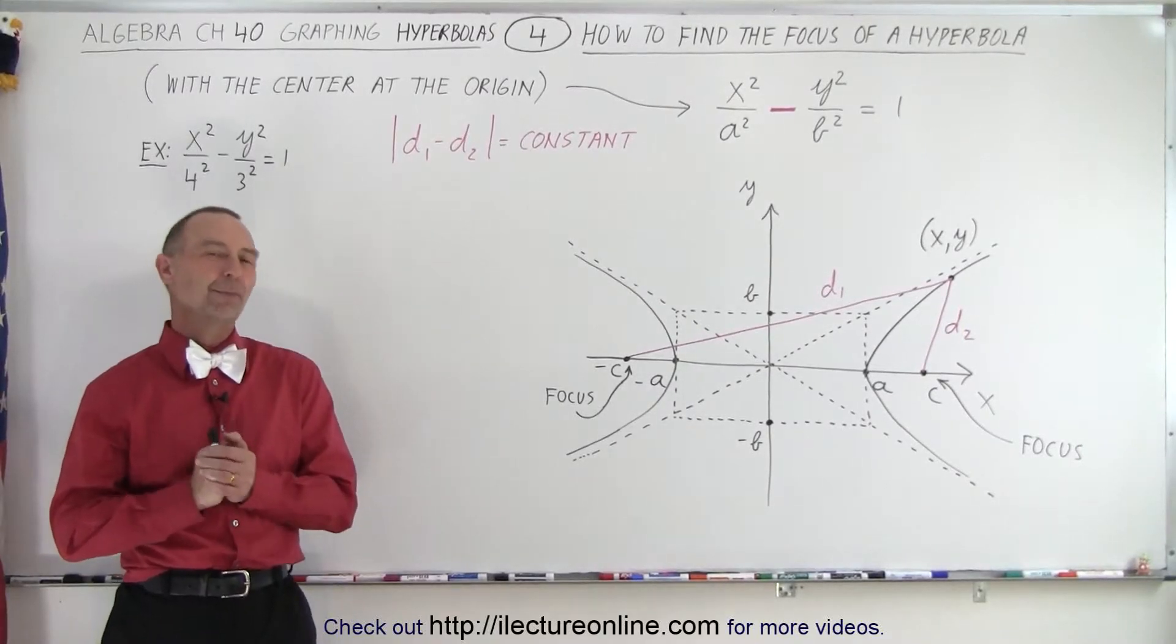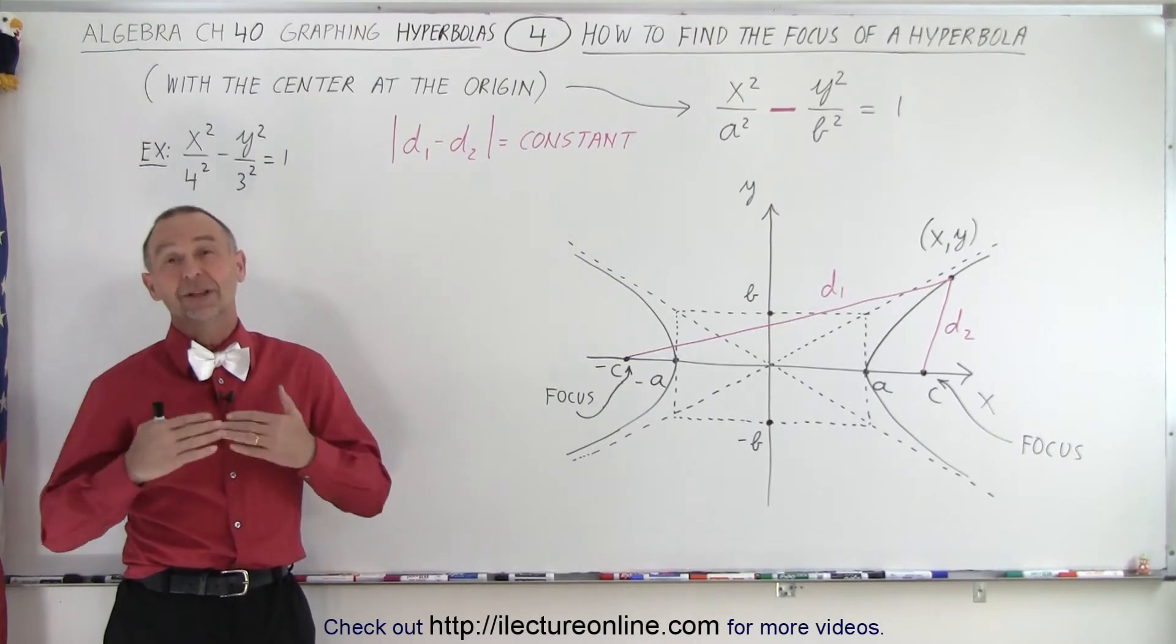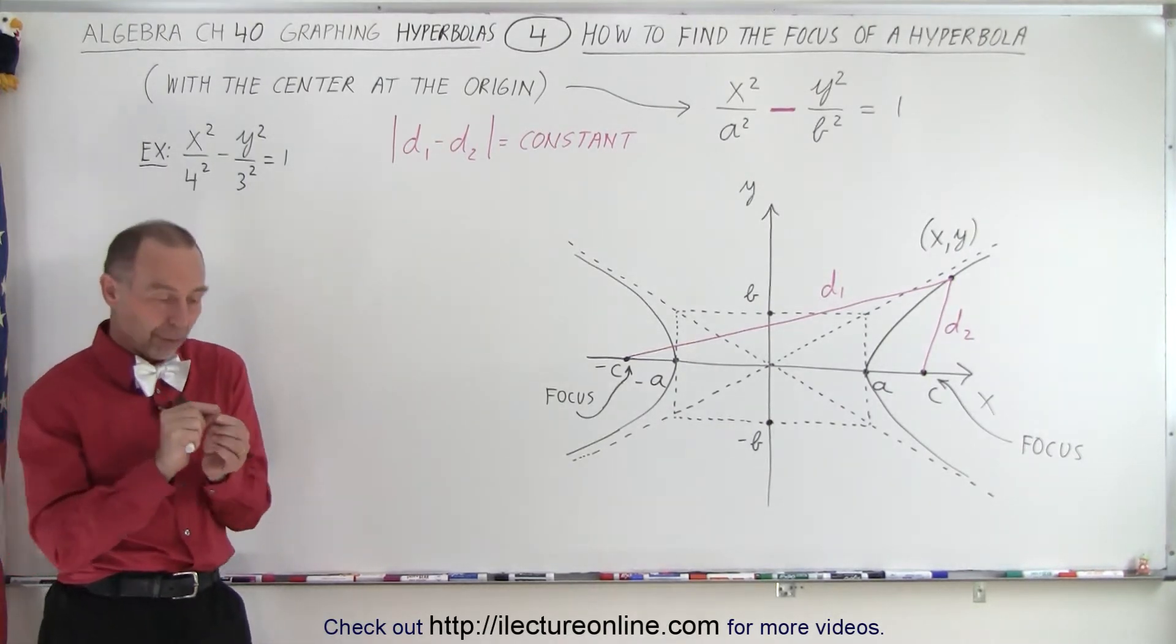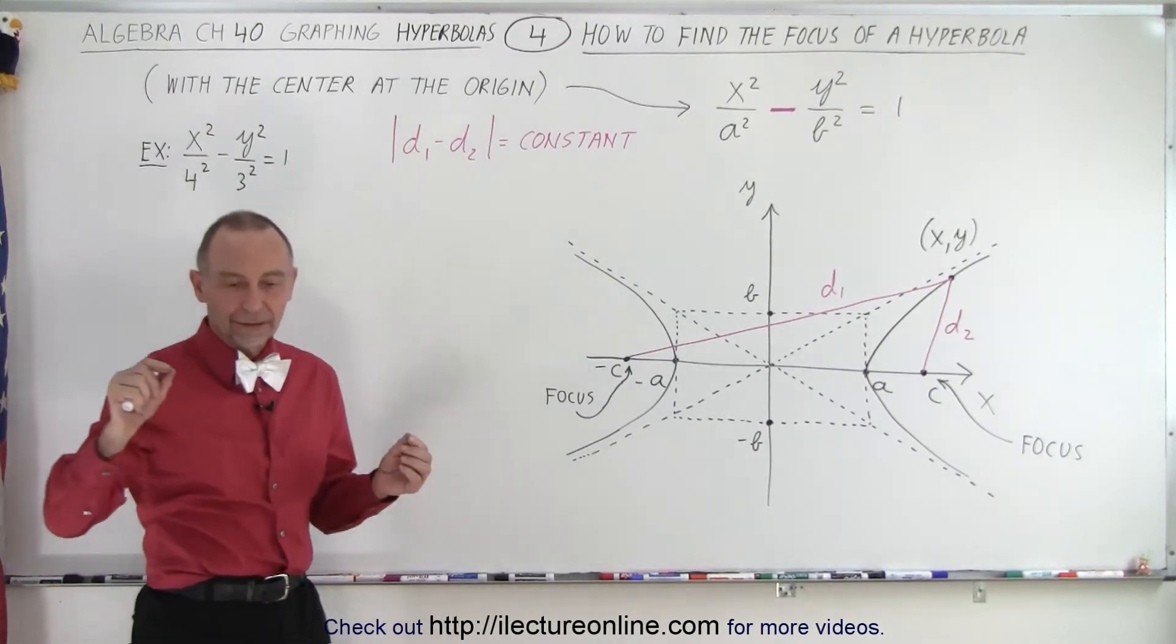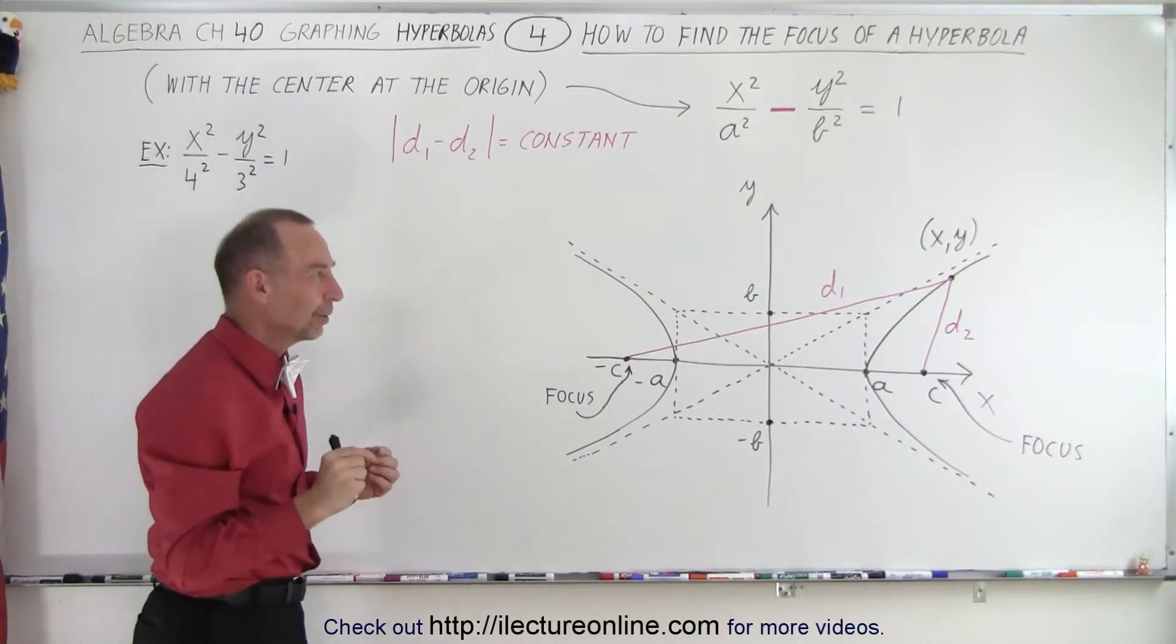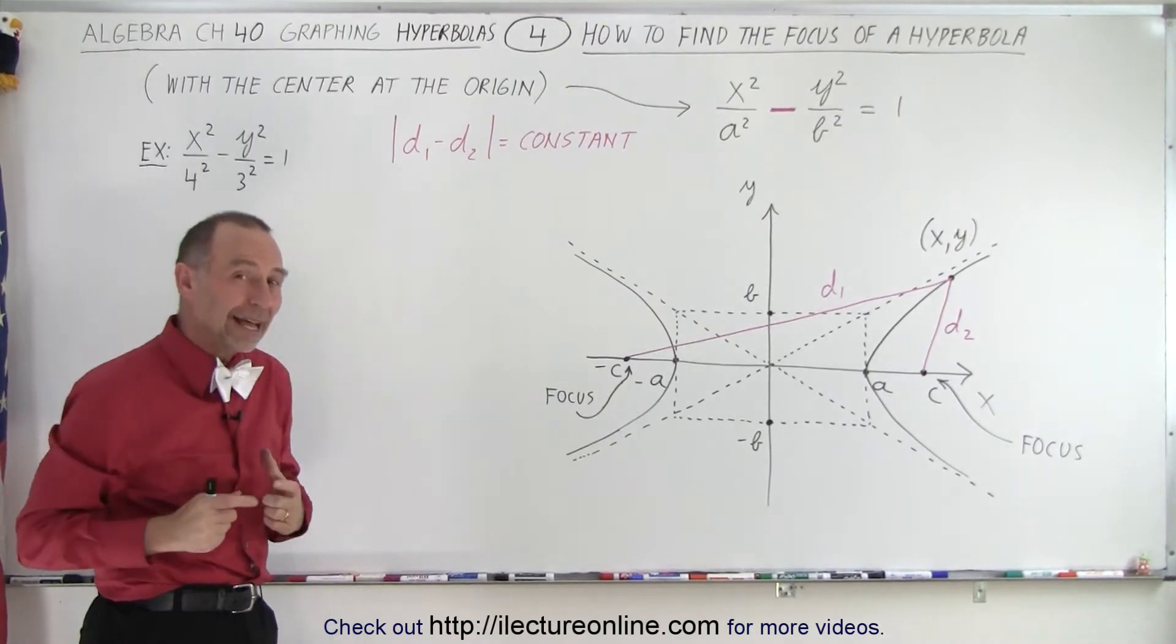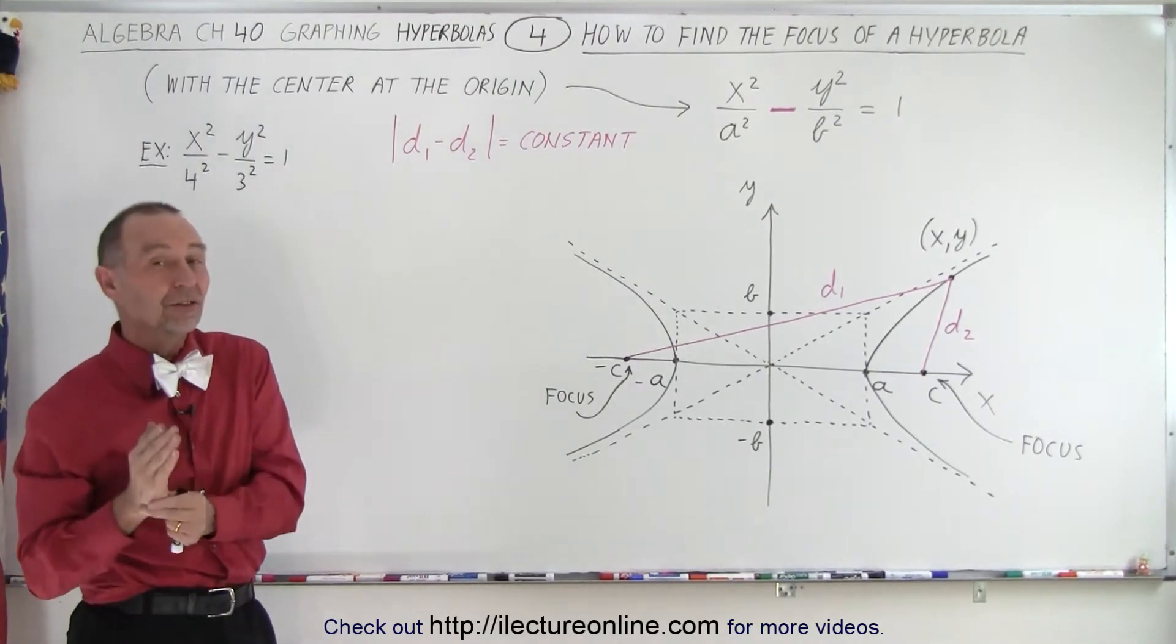Welcome to our lecture online. Remember the first video in the series where we showed that one of the conditions for a hyperbola was that the line drawn from one of the foci to a point on the hyperbola and a line from the other focus to that same point on the hyperbola, the difference between the length of those lines, or the absolute value of the difference between those lines, always equals a constant.